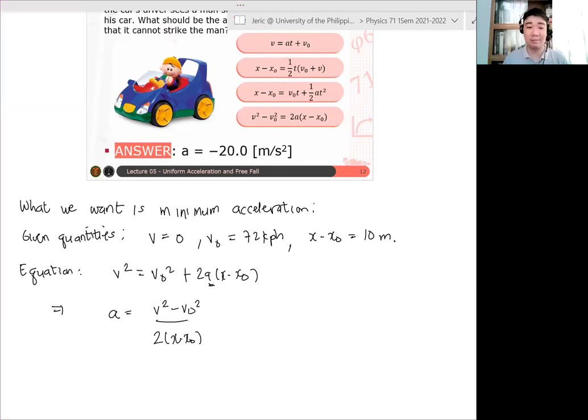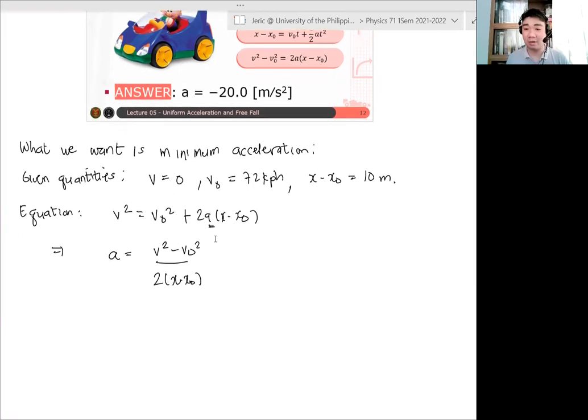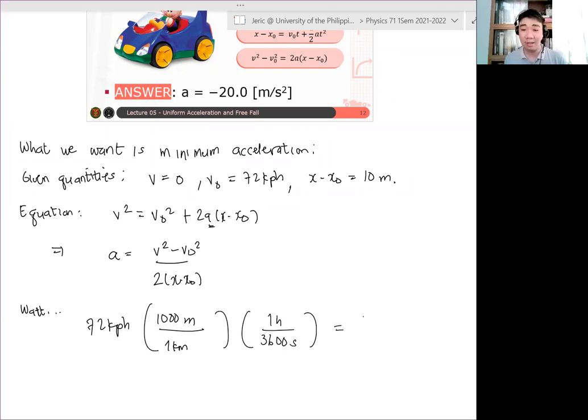And then by substituting all the necessary values, edi sa substitute mo na lang yan. Wait, yung v naught 72 kph, sige na nga i-convert ko na natin. Wait. 72 kph we convert it, ang lalabas dyan times 1,000 meters over 1 kilometer times, ingat sa units minsan ha, minsan may mga ganyang tricky na tanong, 1 hour, 3,600 seconds, and we get 20 meters per second.